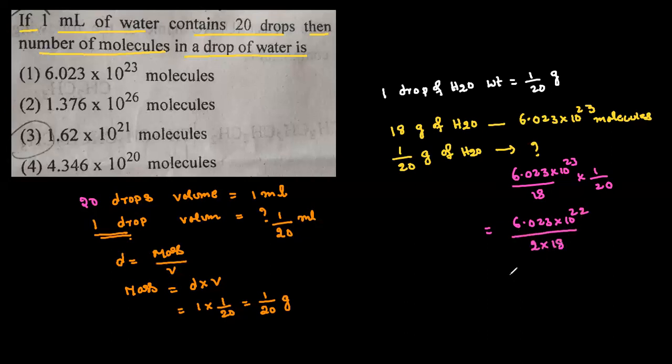So, this is simplified, we will get 1.67 x 10 power 21 molecules.